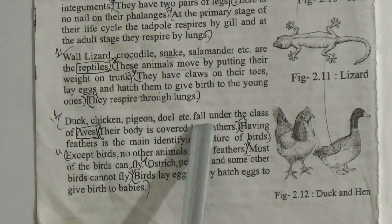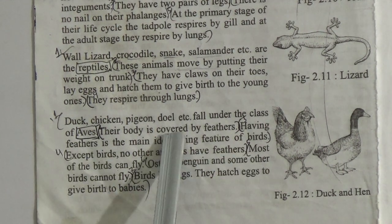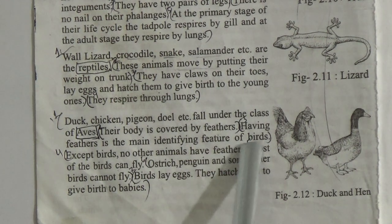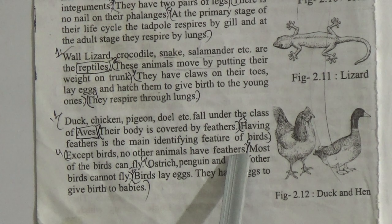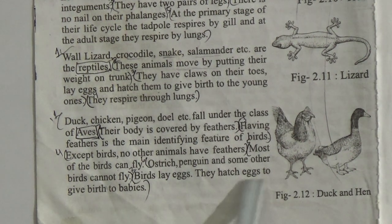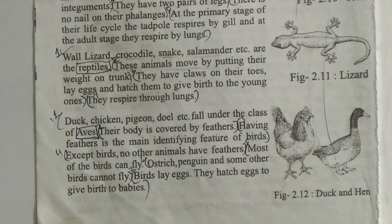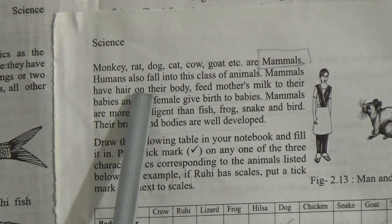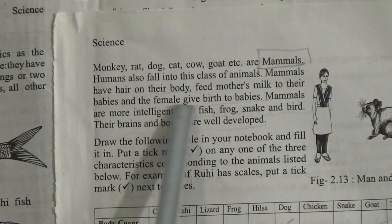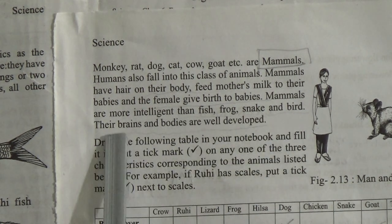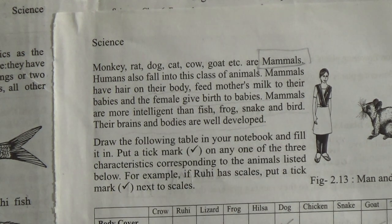Duck, chicken, pigeon, doel, etc. fall under the class Aves. Their bodies are covered by feathers — having feathers is the main identifying feature of birds; no other animals have feathers. Most birds can fly, but ostrich, penguin, and some others cannot. Birds lay eggs and hatch them to give birth to babies. This is page 21. Monkey, rat, dog, cat, cow, goat, etc. are mammals; humans also fall into this class. Mammals have hair on their body, feed mother's milk to their babies, and females give birth to live young. Mammals are more intelligent than fish, frog, snake, and bird — their brain and bodies are well developed.